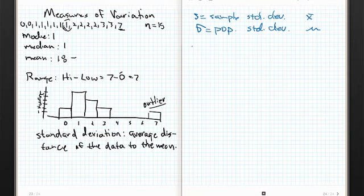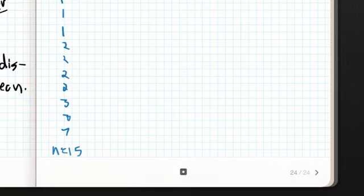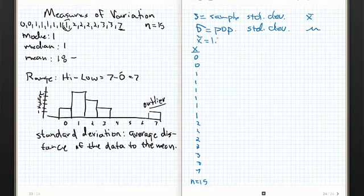Let me take you through this just once so you can see what's going on. First, I list the data — there were 15 of them: 0, 0, then six 1s, four 2s, two 3s, and a 7. I'll confirm n equals 15. We already know the mean is 1.8, so I'll write that down.